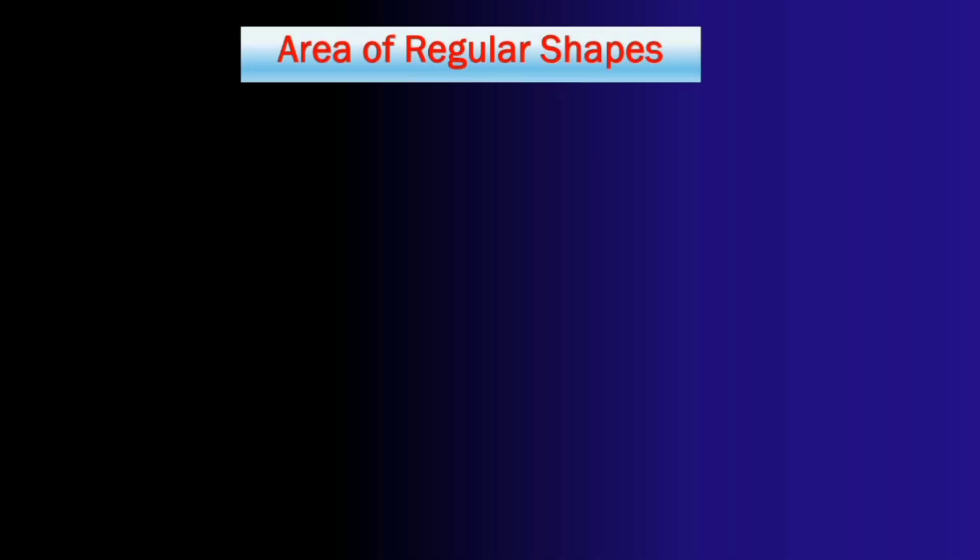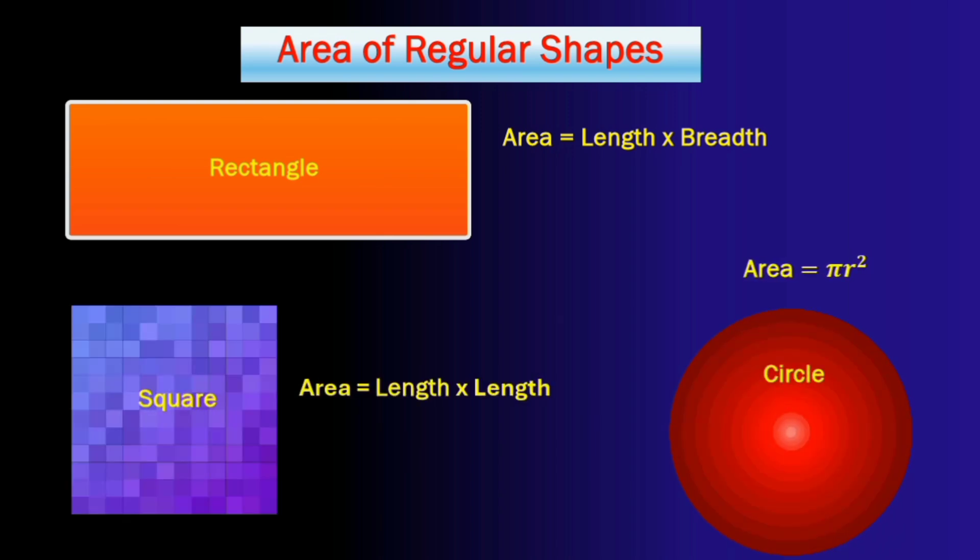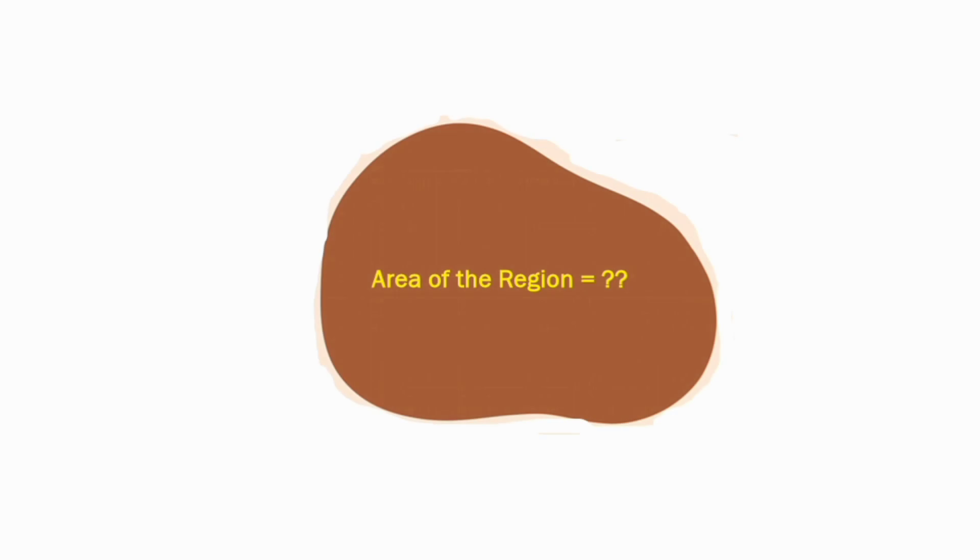Now we have formulae to calculate areas of regular shapes like rectangle, square, circles and many other regular shapes. But how do we find the area of a region like this? As you can see it has no regular shape.